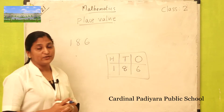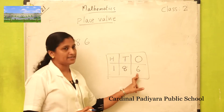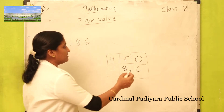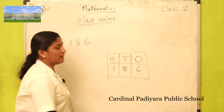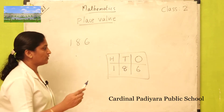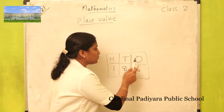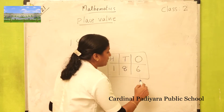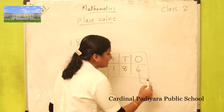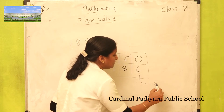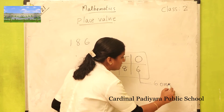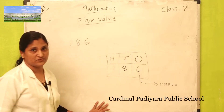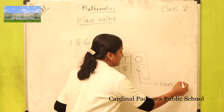Find out the place value of six in one hundred eighty-six. Six is in ones place. How many ones? Six ones. Six ones is six — that number itself.